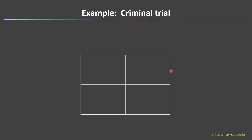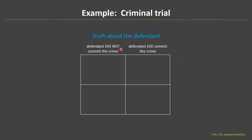Let's look at one more example involving a criminal trial. The truth about the defendant is either that the defendant did not commit the crime or the defendant did commit the crime — as a jury, we don't really know the correct answer. The jury makes a verdict based on the evidence: either not guilty or guilty. If the defendant did not commit the crime and the jury finds the defendant not guilty, that was the correct verdict. If the defendant did commit the crime and the jury finds the defendant guilty, again that's the correct verdict.